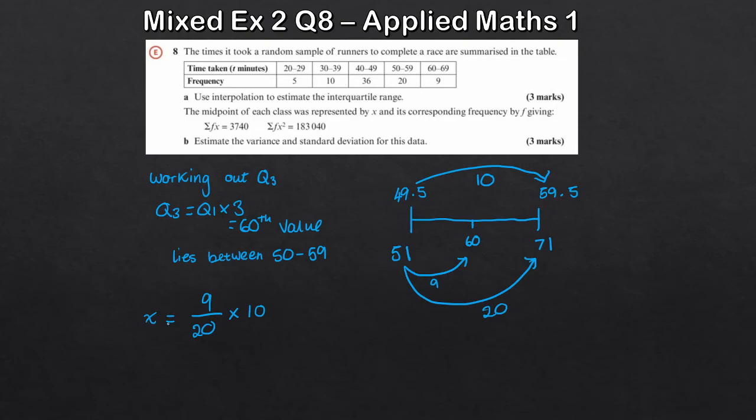All I do is take 49.5 and we add on x. We in this case x will be 4.5, to give us 54 for Q3. So Q3, 54. Q1, 40.9.